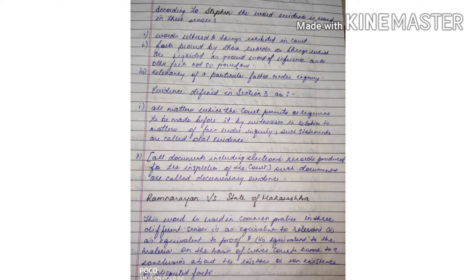In the case of Ram Narayan versus State of Maharashtra, it was said that the word 'evidence' is used in common practice in three different senses: first, as equivalent to relevant; second, as equivalent to proof; and third, equivalent to the material on the basis of which the court comes to a conclusion about the existence or non-existence of a disputed fact.